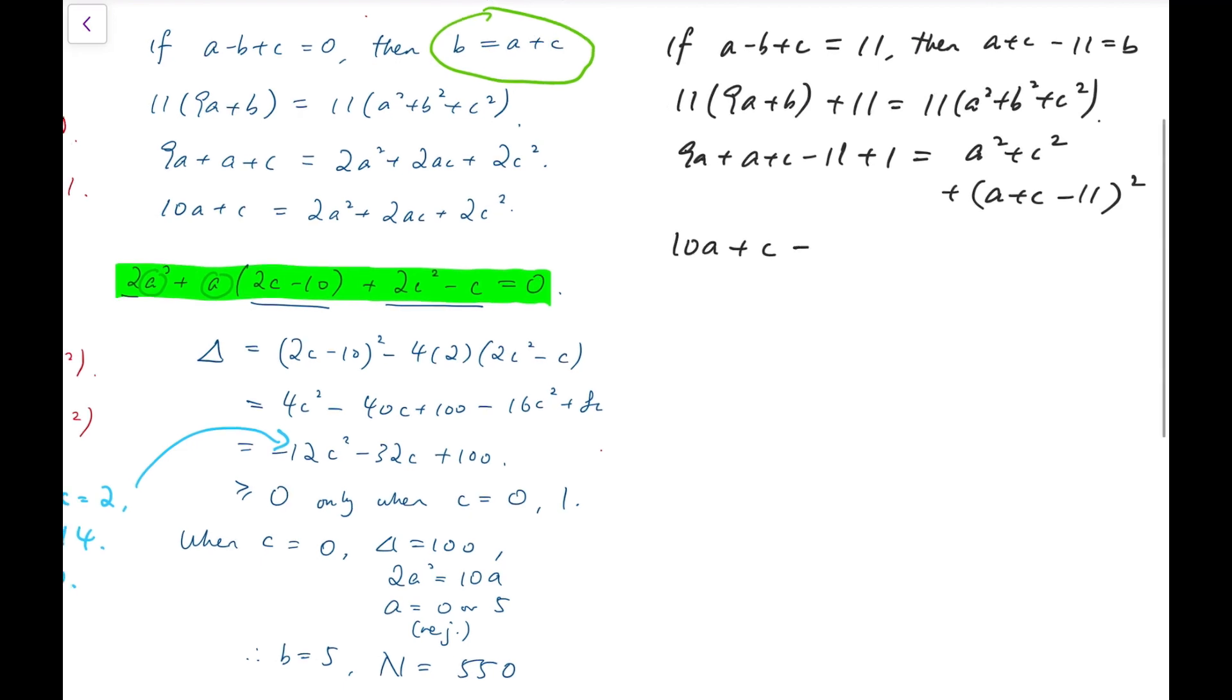Now I'm going to expand everything and simplify. For the left-hand side, we'll have 10a plus c minus 10. And for the right-hand side, we'll have 2a squared plus 2c squared plus 2ac minus 22 times a plus c plus 121. Now I'm going to use the same strategy, which is that 2a squared plus 2c squared plus 2ac minus 32a minus 23c plus 131 equals 0. And I'm going to make another quadratic equation about the variable a.